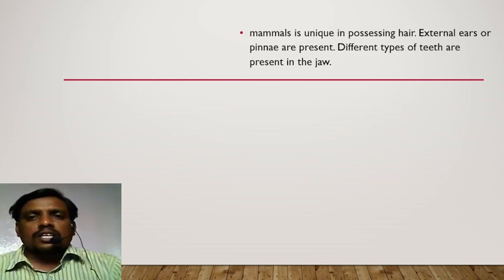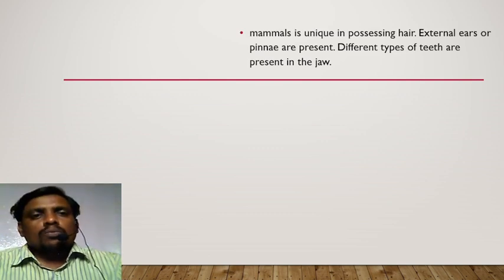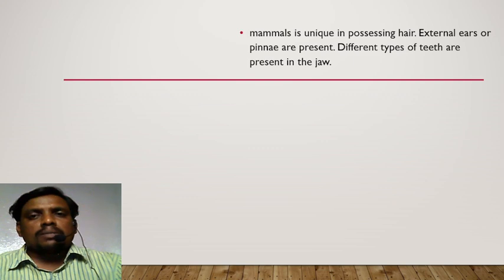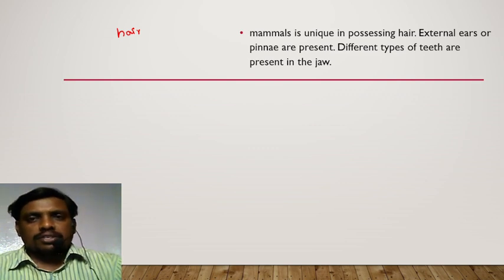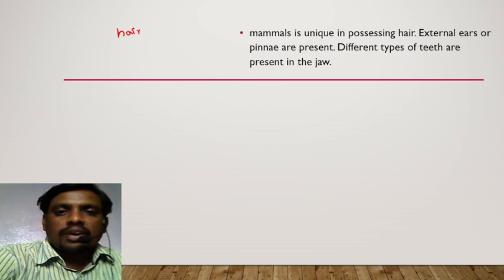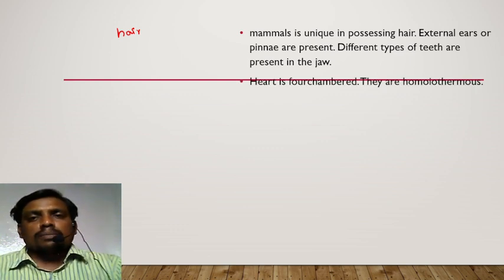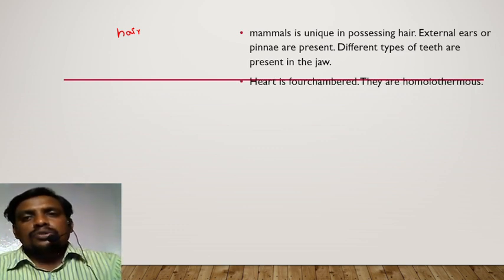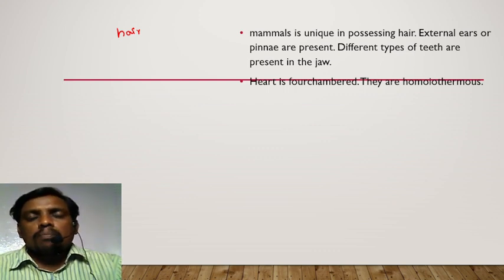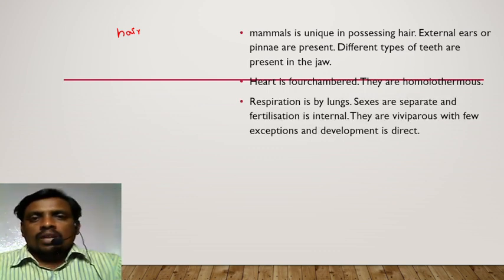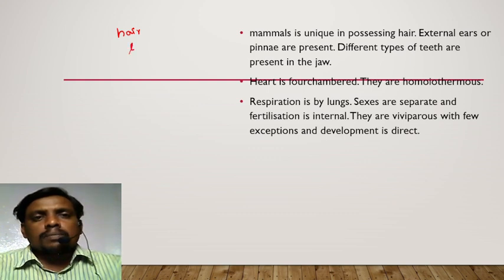Mammal's unique processing — one more unique character of mammal's processing: hair on the body surface. Axial ears and pinna are present. Different types of teeth are present in the jaw. The heart is four-chambered. They are homeothermous animals, which means warm-blooded animals. Respiration is occurring mostly by lungs.